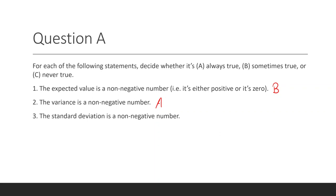And when you take the expected value of a random variable which is never negative, you get something that's never negative. And therefore, the standard deviation is also a non-negative number because it's the square root of the variance.